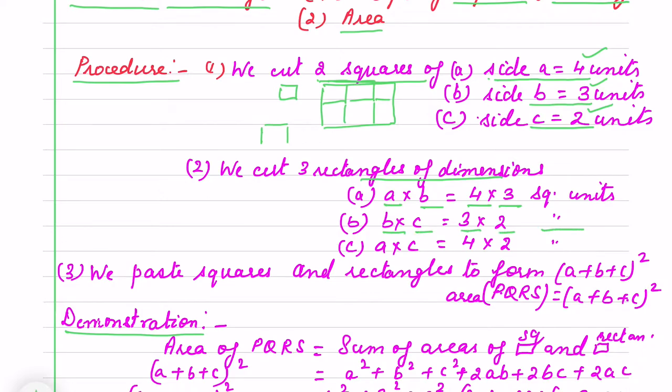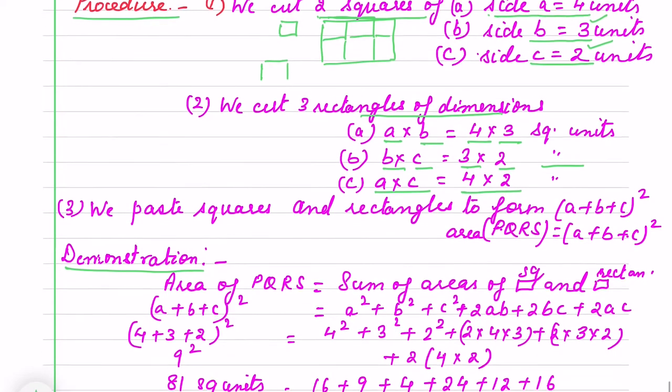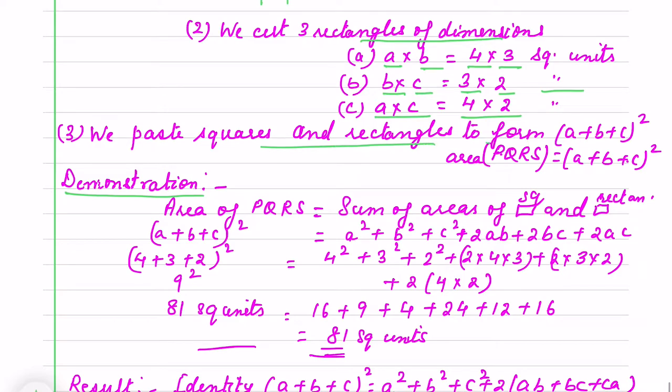You have to cut rectangles. Again a×c is 4×2. We paste squares and rectangles to form (a+b+c) whole square. Area is PQRS. If the bigger square is (a+b+c) whole square.